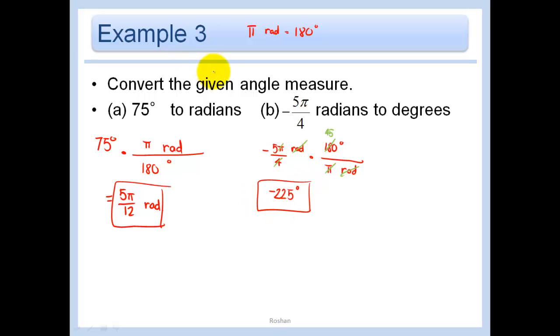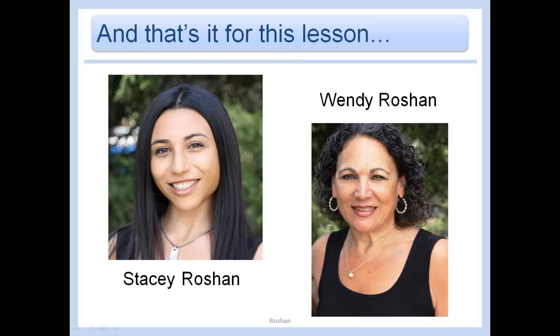So again, this is just unit conversion. If you have degrees in the top, you want to cancel out with degrees on the bottom. And just know that π radians is equal to 180 degrees, and you can do all this stuff quite easily. And that's it for this lesson! Bye!